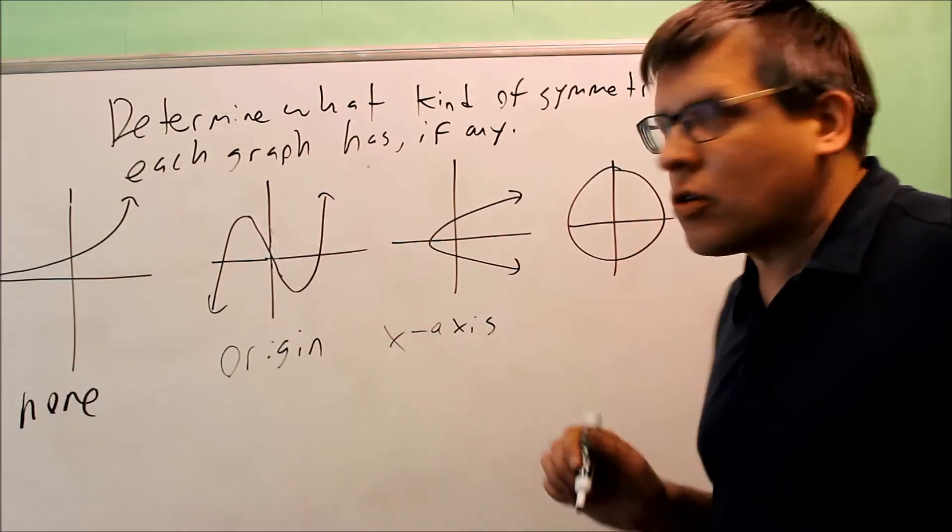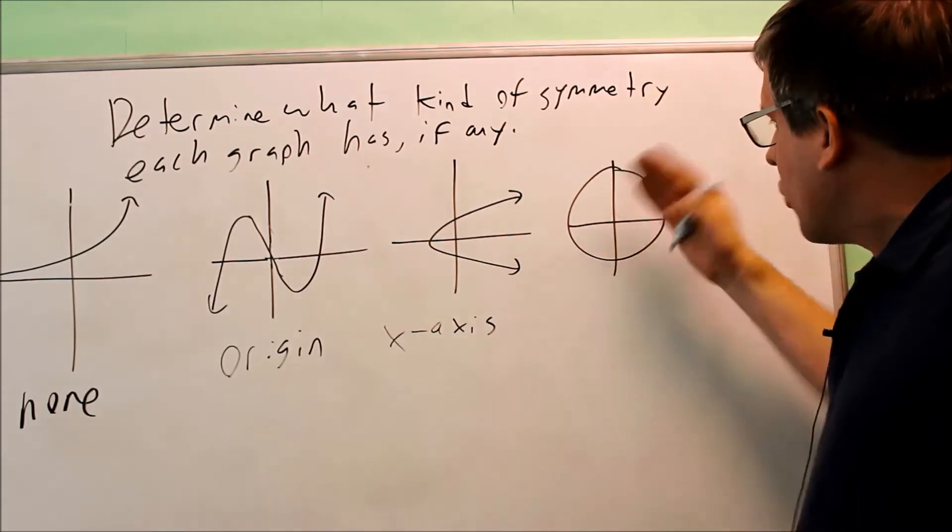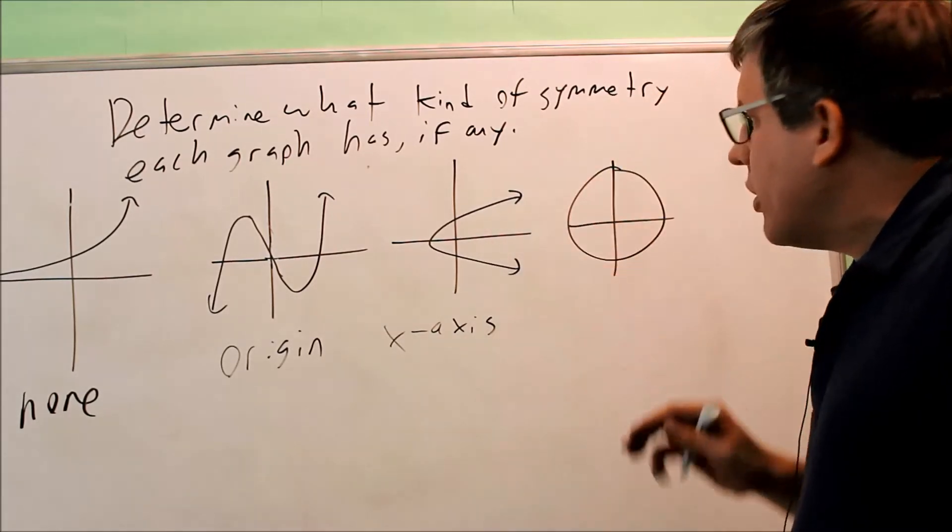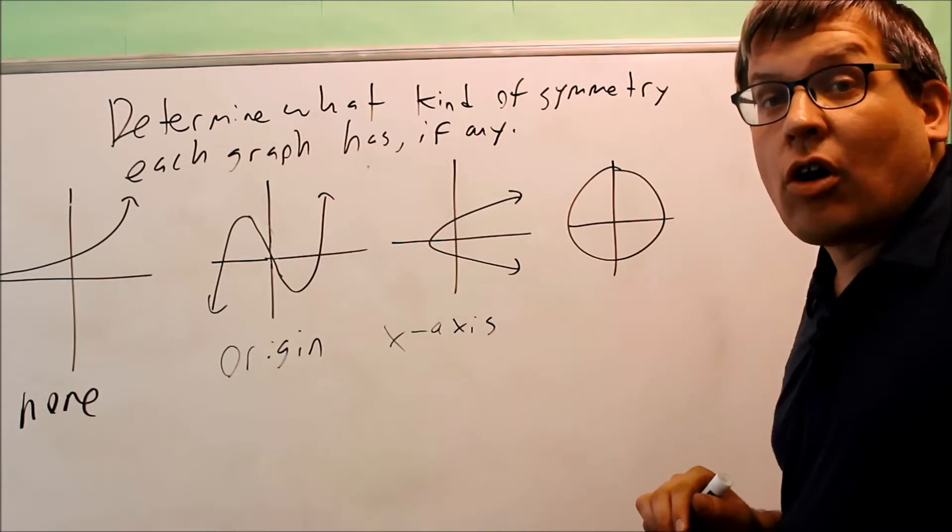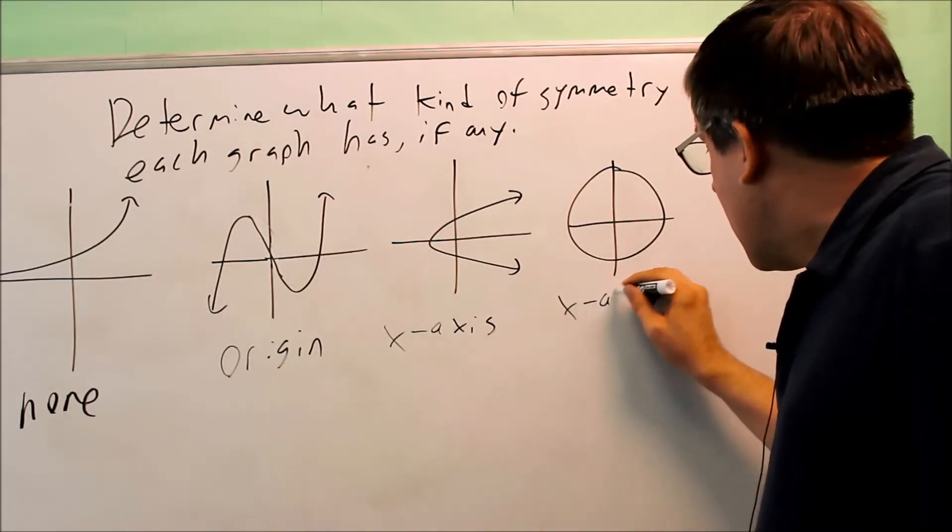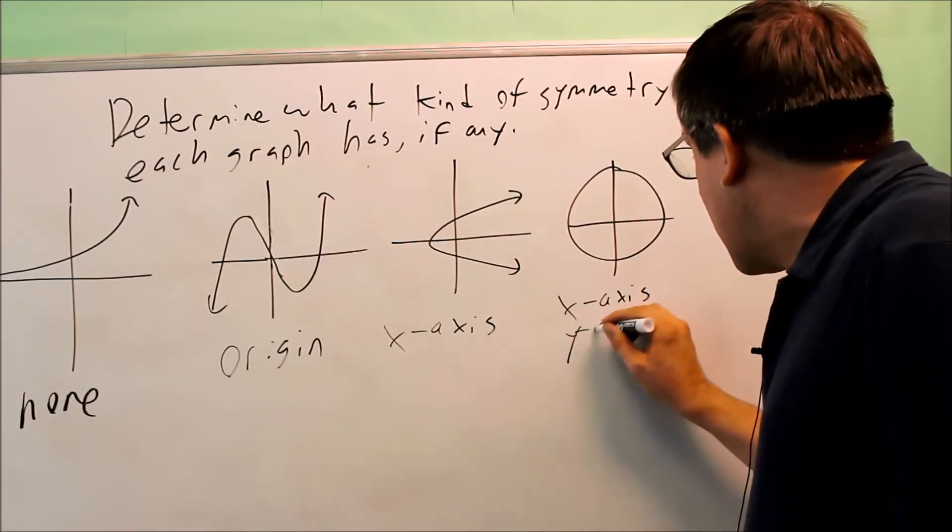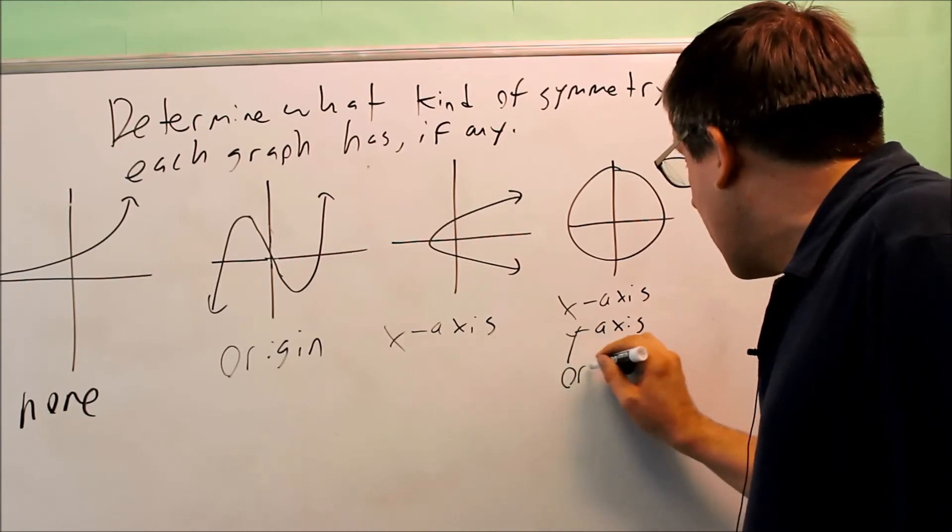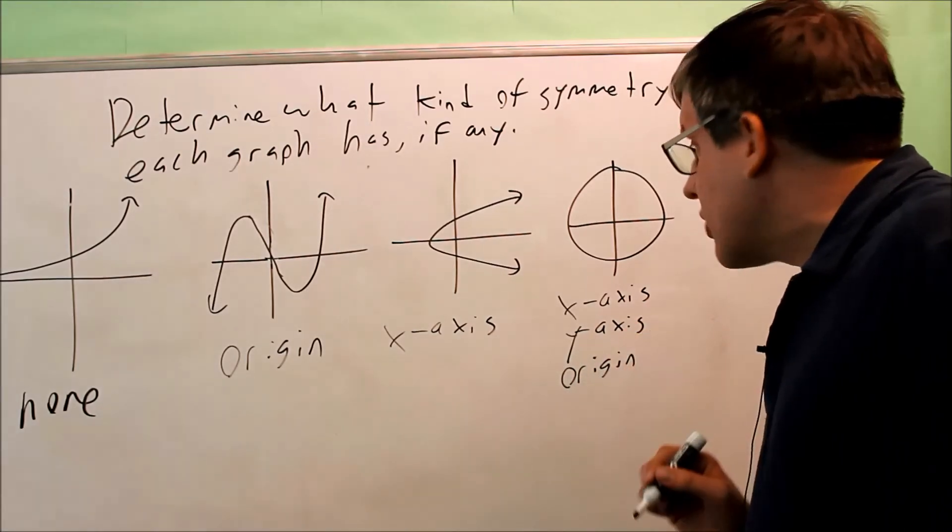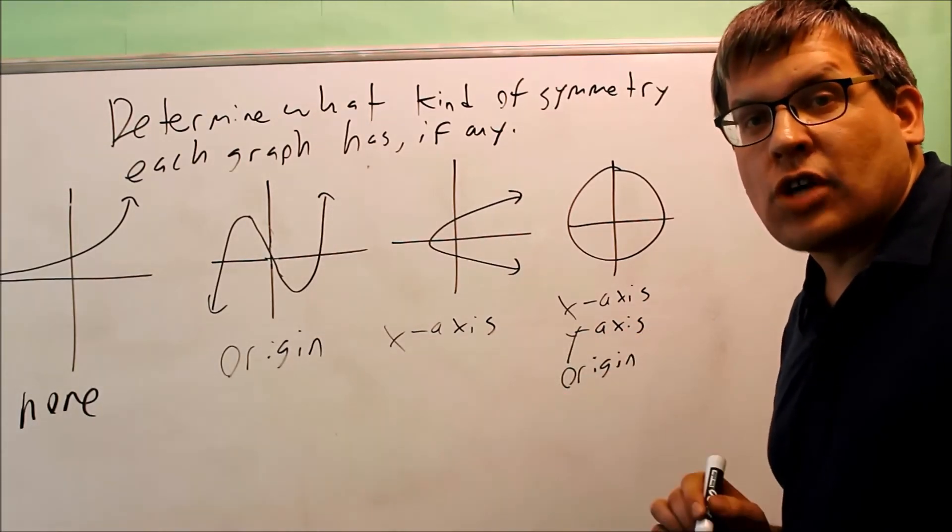Now the last one is a circle. Circles, you can fold down this way or this way or diagonally. So therefore, that's actually going to have all three symmetries. It has x-axis symmetry, y-axis symmetry, and origin symmetry. So this one is actually going to have all three different types of symmetries.